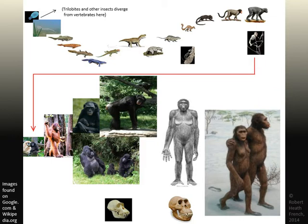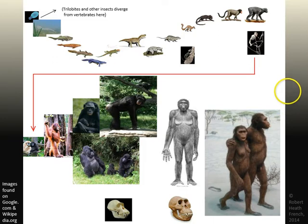There is a correct intuition in there: if dinosaurs evolved into birds, why are there still crocodiles? That's tough. But I would encourage you to go back to our opening discussion of speciation — geographic separation, ecological specialization, and ecological relationships — and that should sufficiently explain the answer to that question.